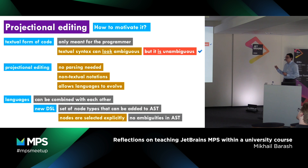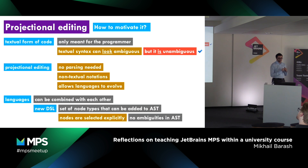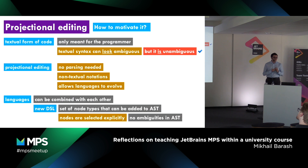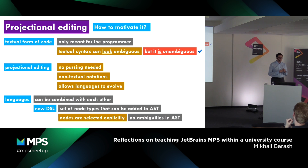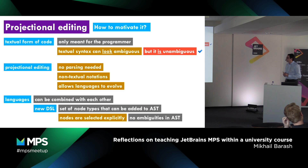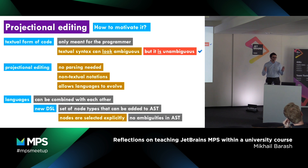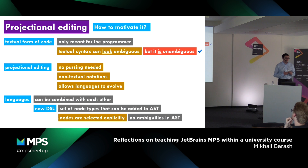Three main points on how to motivate projectional editing for students. First, we can finally have ambiguous syntax — and it's fine, because a classical university course on compilers would say programming languages should always be unambiguous. Second, we do not need any parsing, and students were happy about that. Third, we can combine languages.